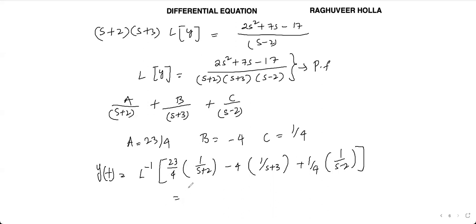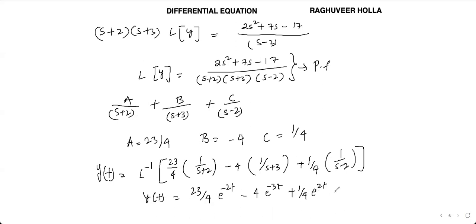Taking the inverse Laplace transform: y(t) = (23/4)e^(-2t) - 4e^(-3t) + (1/4)e^(2t). This matches the solution obtained from all previous methods. Please share your feedback on this video — thank you!